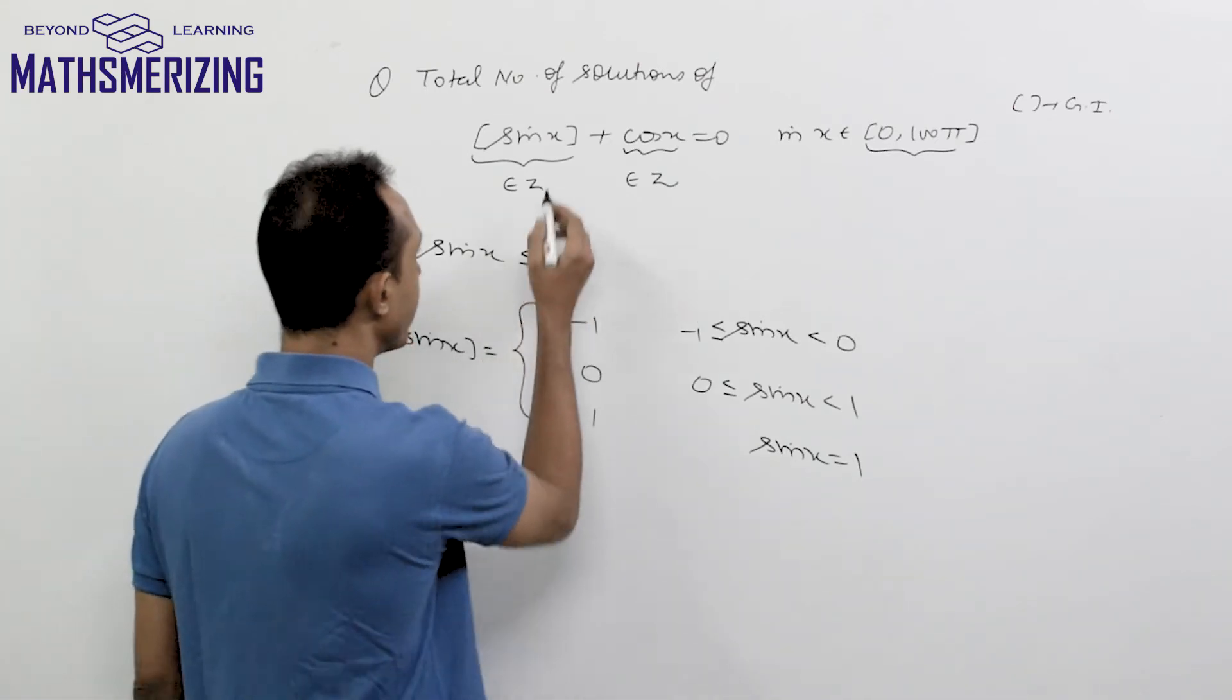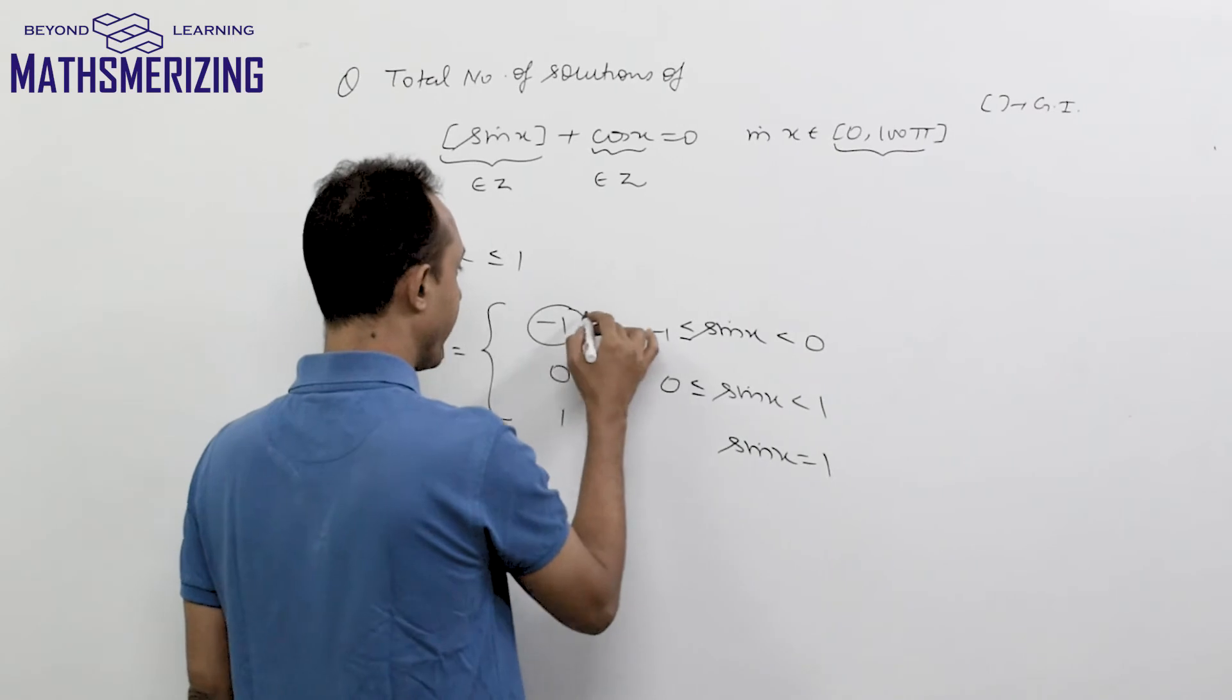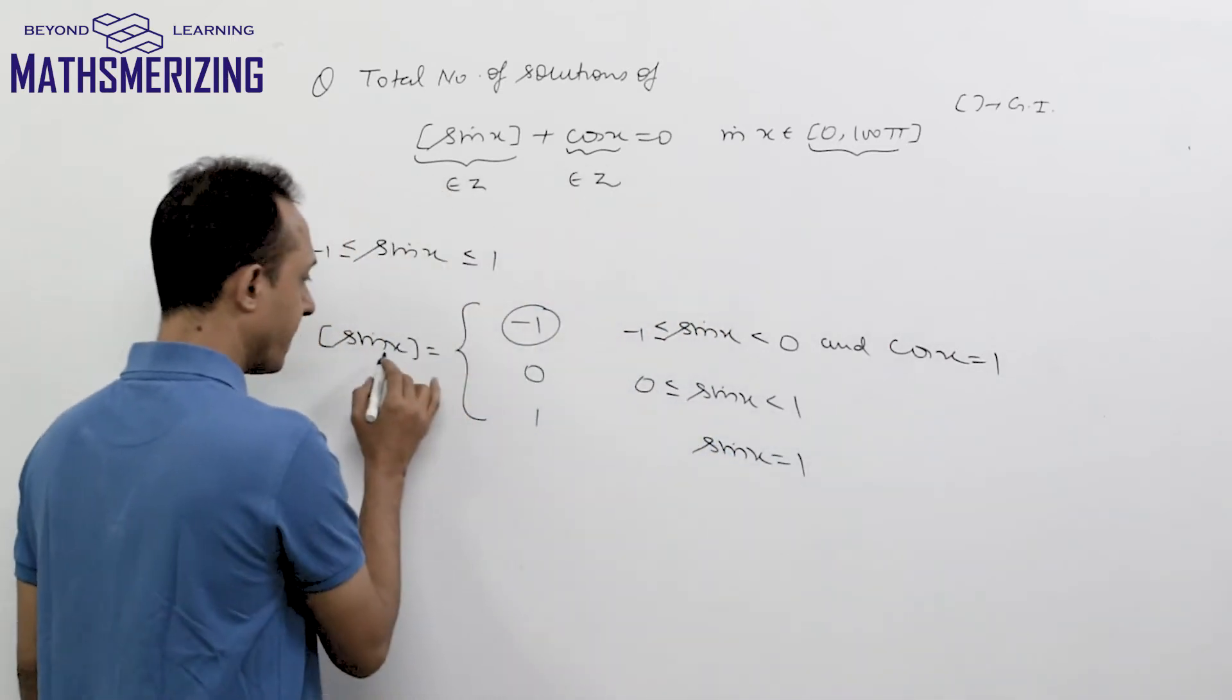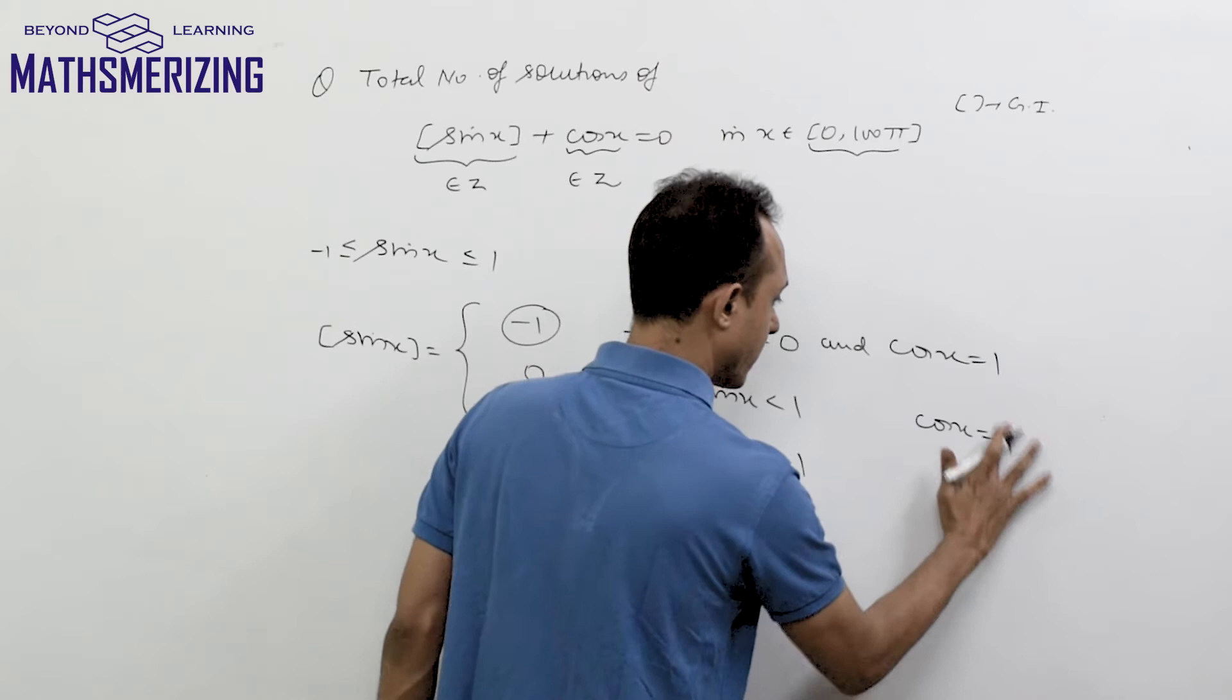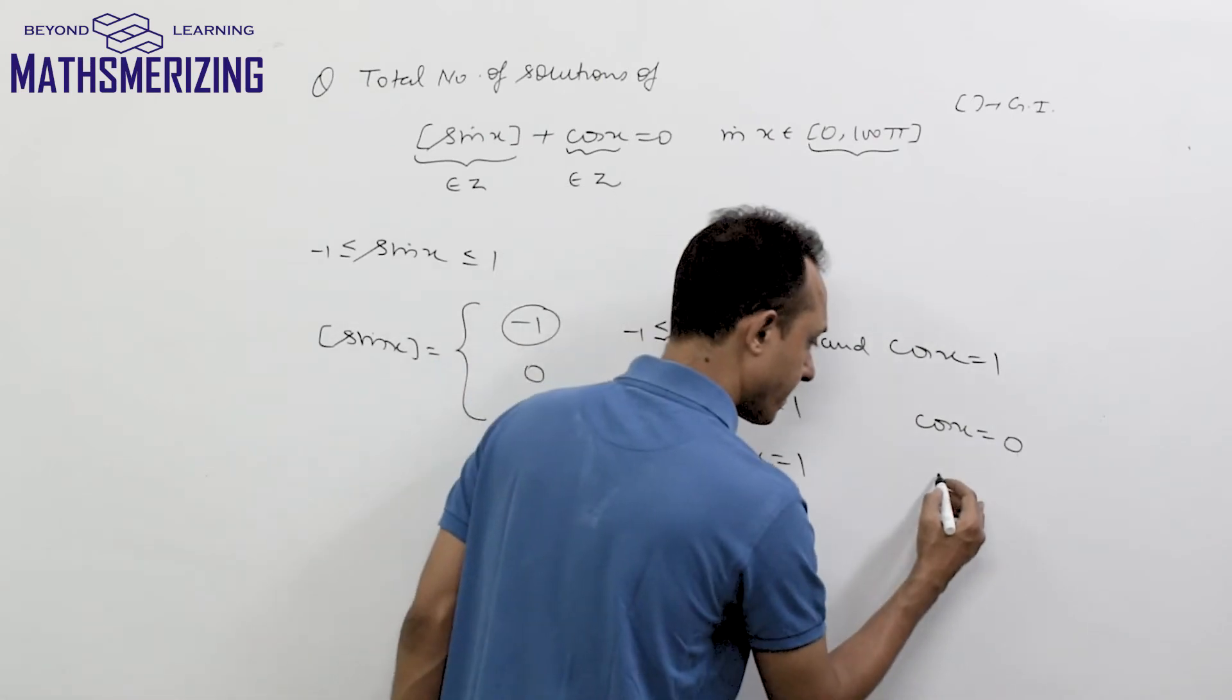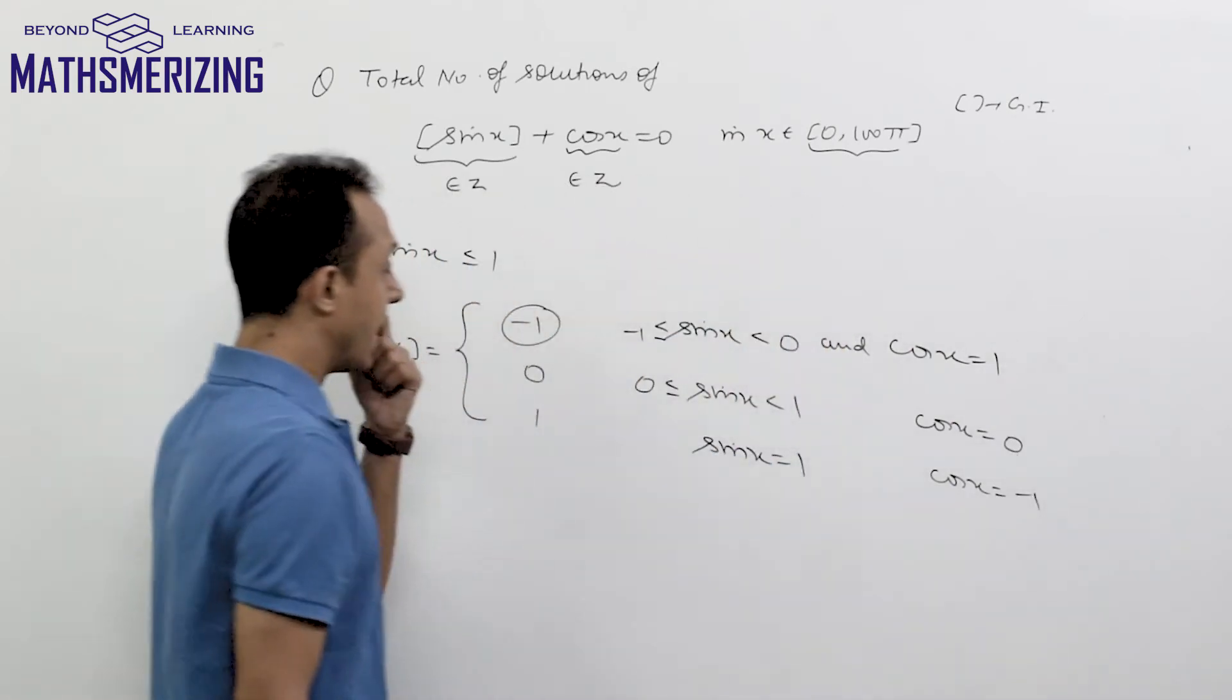For this equation to have a solution, sin x and cos x should cancel each other. So if [sin x] is -1, then cos x should be +1. If [sin x] is 0, cos x should be 0. And if [sin x] is 1, then cos x should be -1.